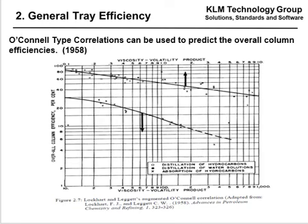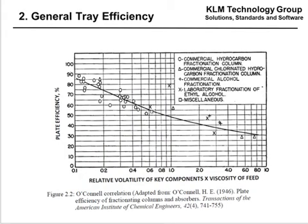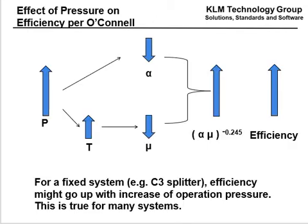General tray efficiencies from 1958: O'Connell-type equations can be used to predict an overall tray efficiency based upon viscosity and relative volatility. Relative volatility is the difference in the boiling points, and it's taken to the minus 0.2. This has been around since 1946 and can be used fairly effectively to estimate general tray efficiencies. As pressure goes up, the alpha K's go down; as temperature goes up, the viscosity goes down. Because this is to the negative, efficiency goes up. For a fixed system like a C3 splitter, efficiency might go up with an increase in operational pressure.